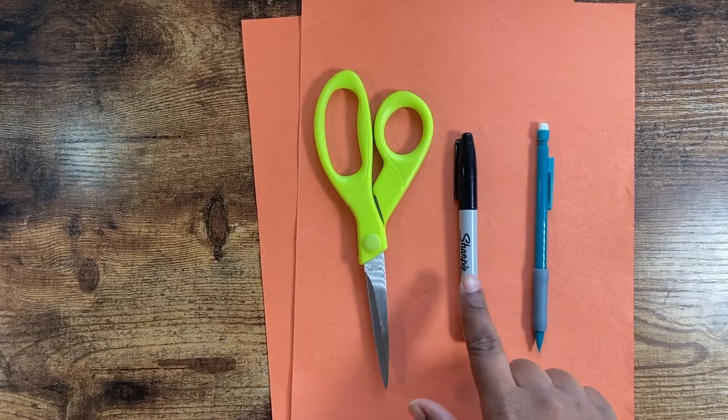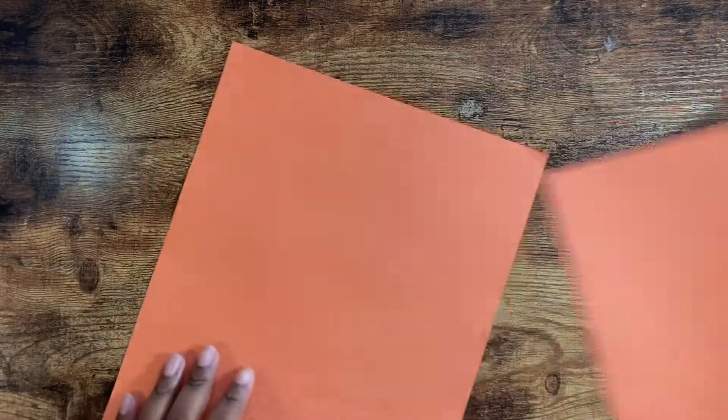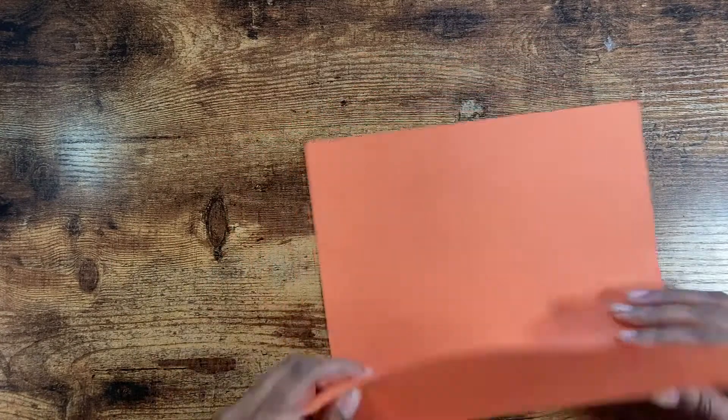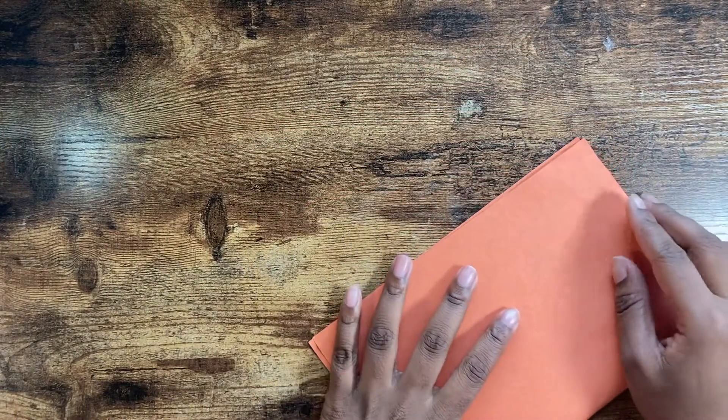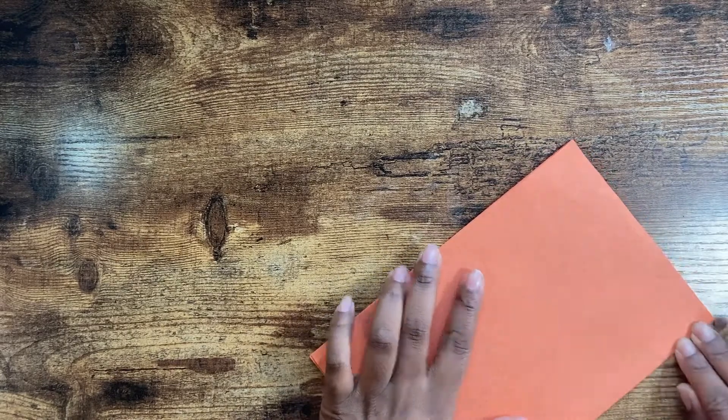We're going to start with scissors, a marker, a pencil, two pieces of orange paper, and metal clasps. Take your first piece of paper. We're going to fold it hamburger style. Make sure that you got that crease there.